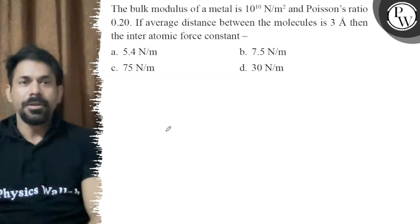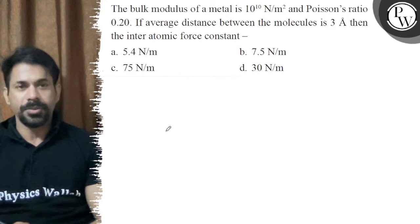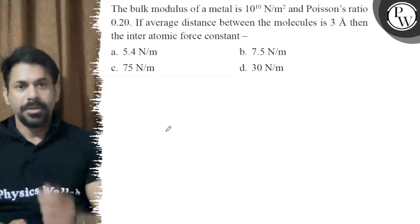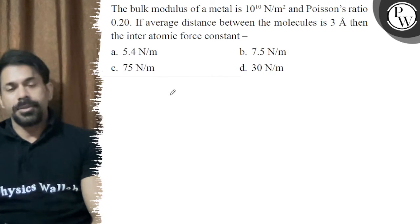Hello, let's see the question. The bulk modulus of a metal is 10 power 10 N/m² and Poisson ratio is 0.20. If the average distance between the molecules is 3 Angstrom, then find the interatomic force constant.